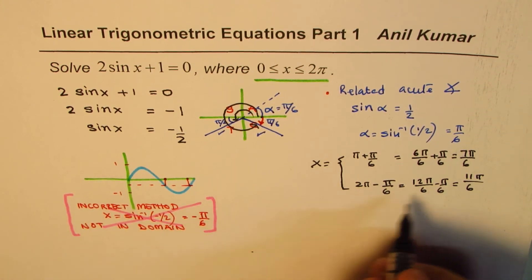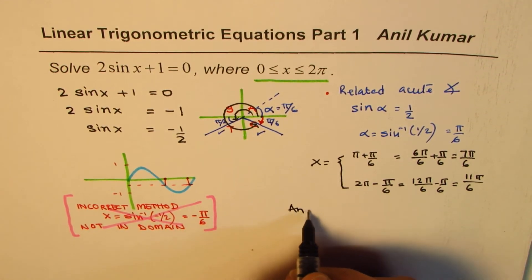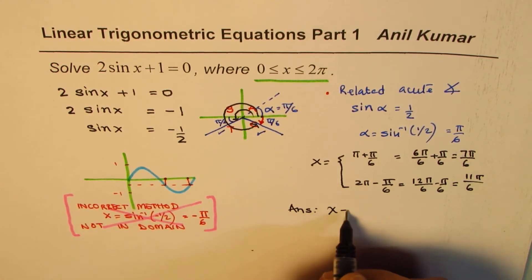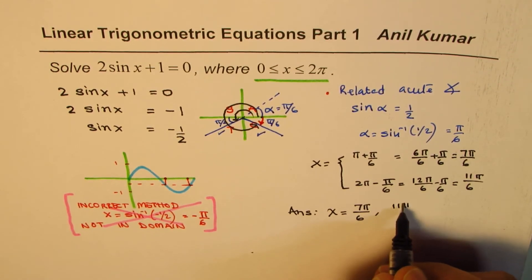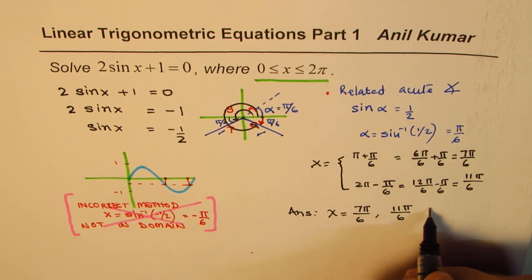And so the solutions are, we can write their answer as x equals to 7π/6 and 11π/6. Both are in radians.